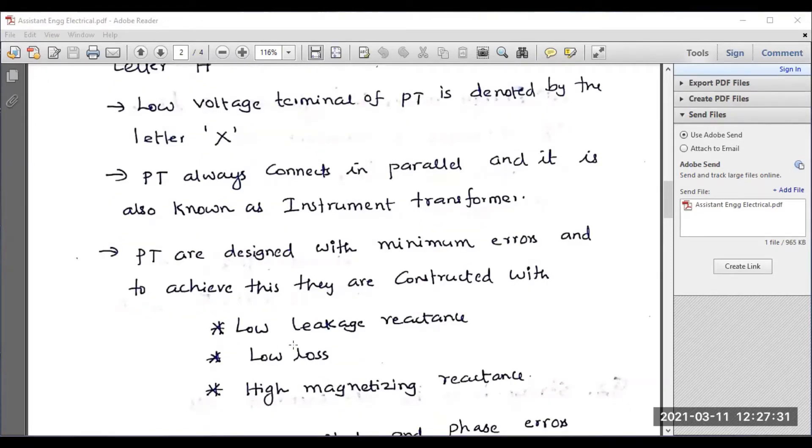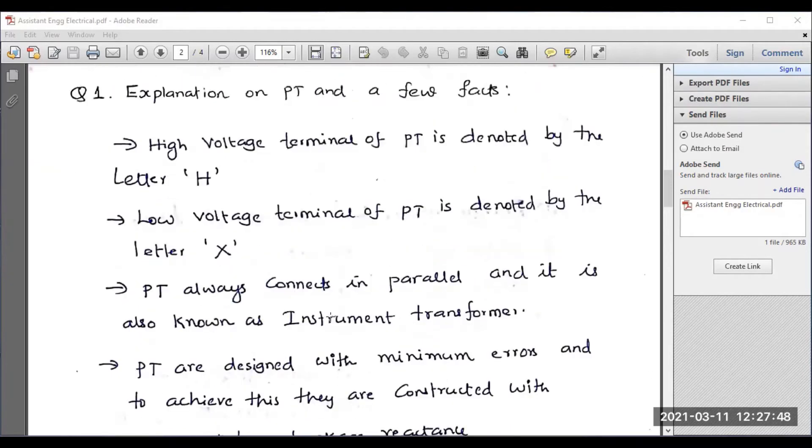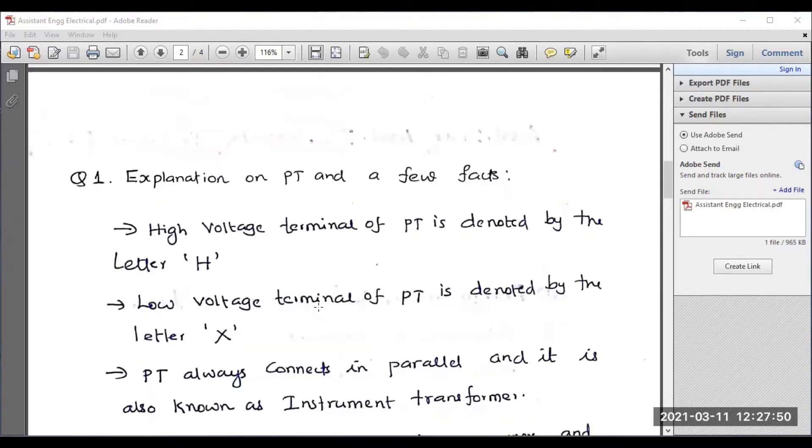The following points need to be considered: low leakage reactants, low losses, high magnetizing reactants. These points will be considered while designing the PT. Normally, magnitude and phase errors are the commonly occurred error in potential transformer.